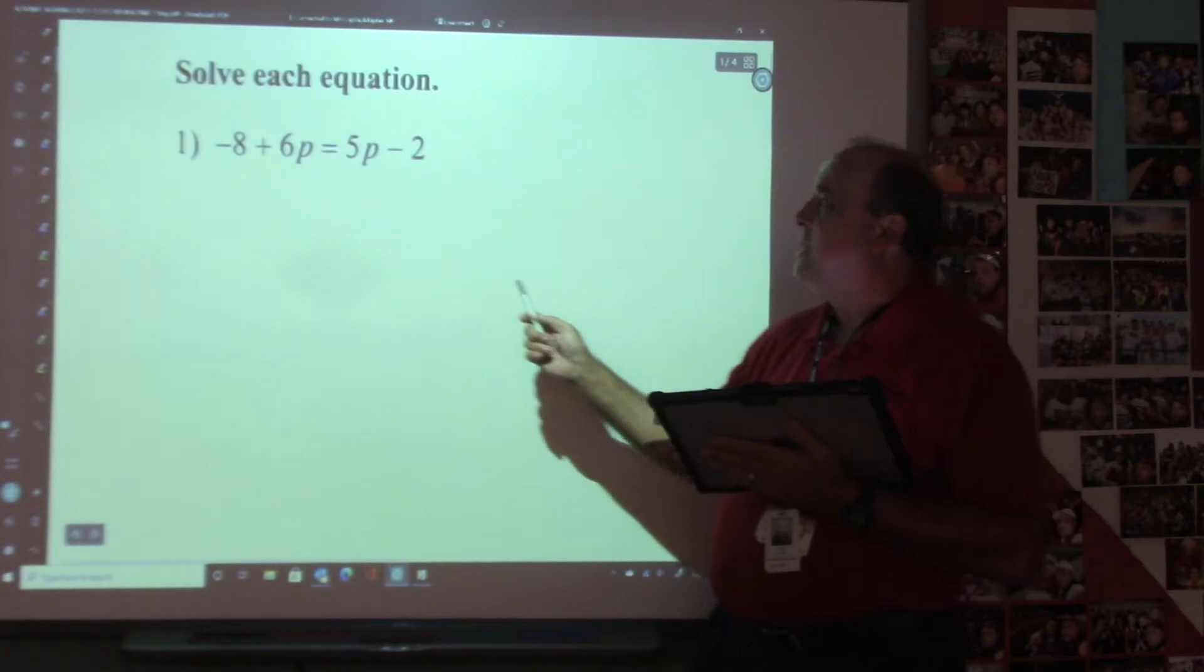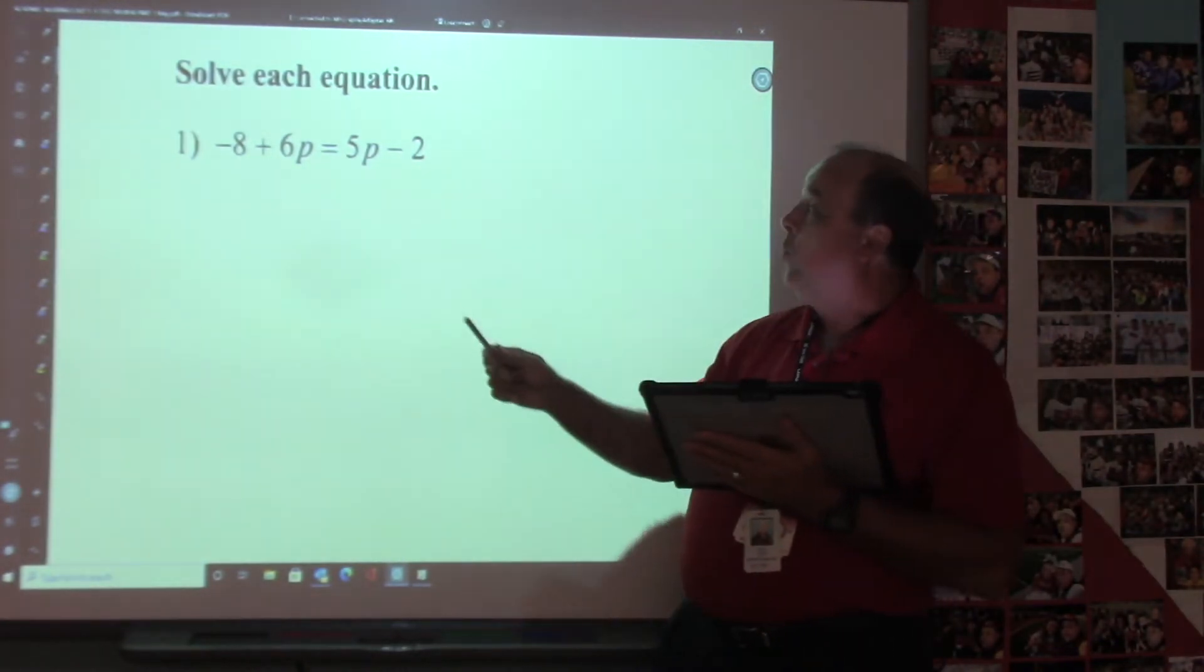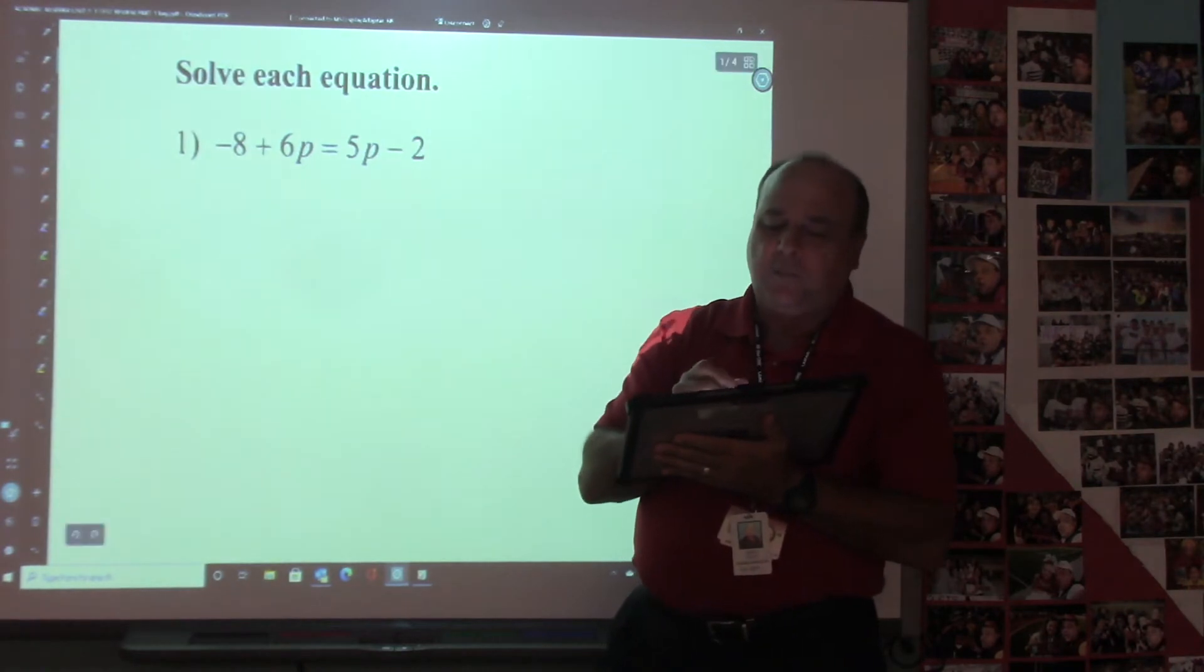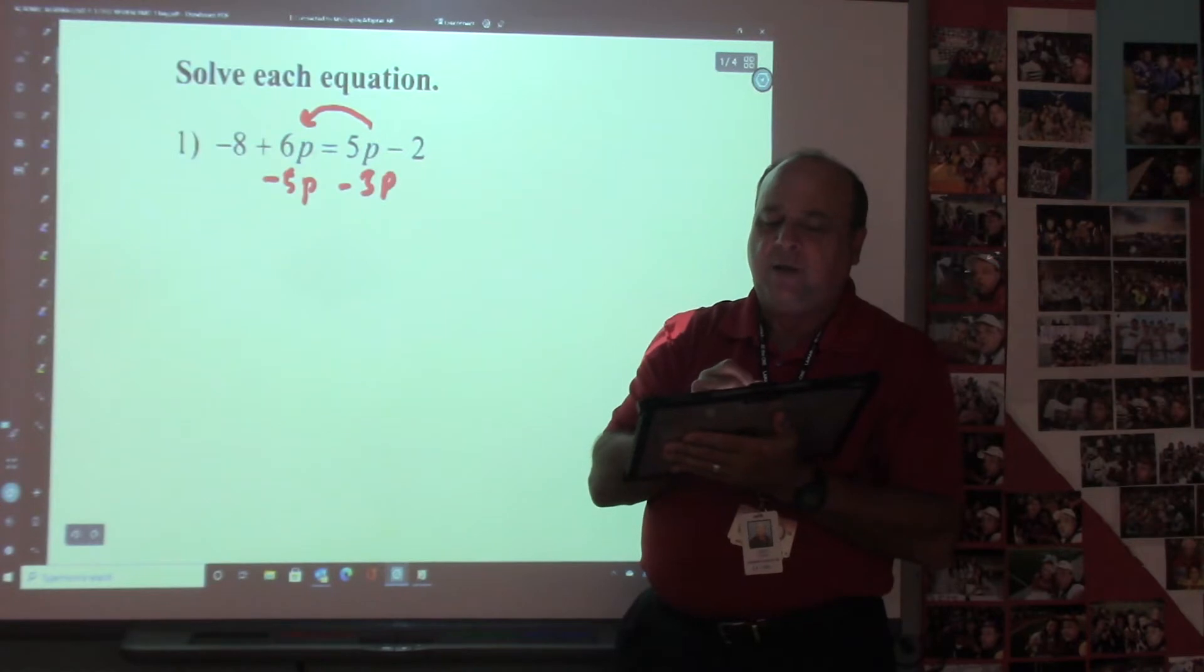Right here, what did I teach you? The day before, we learned to move the smallest letter. So right here, my smallest letter is 5p. I'm going to move the 5p across. And 6p minus 5p is just p. So my -8 + p equals, and this 5 right here cancels out, -2.